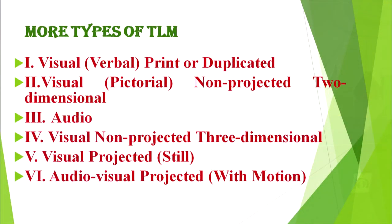Let's move further to more types of TLM. There are six types: first, visual or verbal, print or duplicated; second, visual, pictorial, non-projected, two-dimensional; third, audio; fourth, visual, non-projected, three-dimensional; fifth, visual, projective, that is still; and the last is audio-visual, projected, that is with motion.